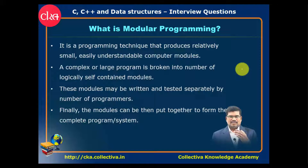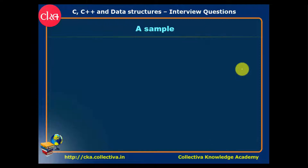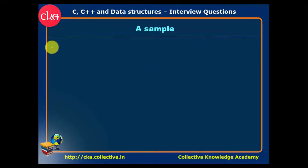Now let's look at modular programming practically with an example. When we run a program, a menu comes up with options: first, factorial; and we can select from the menu options displayed.